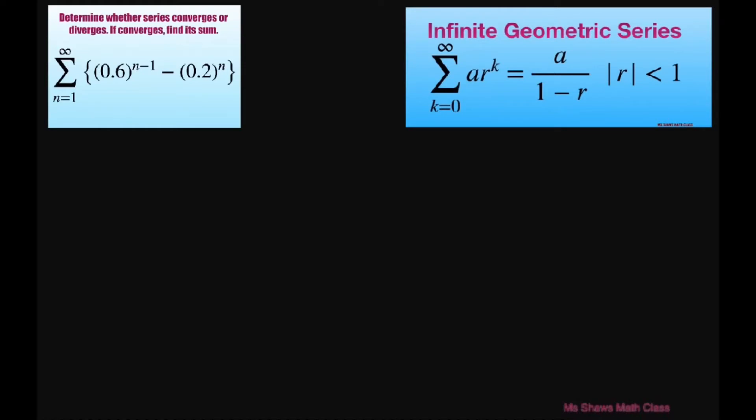So basically what we have is two geometric series which we could write as the sum from n equals 1 to infinity of 0.6 to the power of n minus 1, minus the sum from n equals 1 to infinity of 0.2 to the power of n. This is your sum 1 and sum 2.